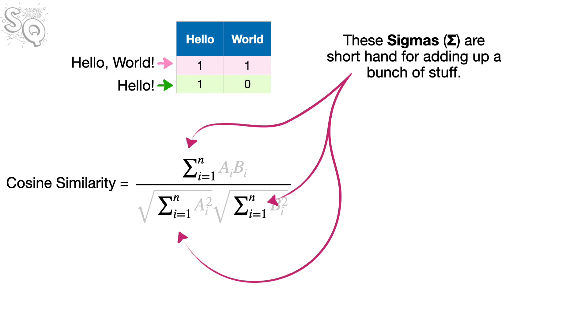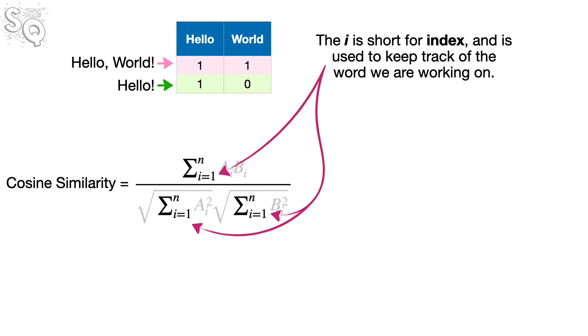These sigmas are shorthand for adding up a bunch of stuff. The i is short for index, and is used to keep track of the word we are working on. i starts out set to 1, the first word in the table. In this case, the first word is hello.